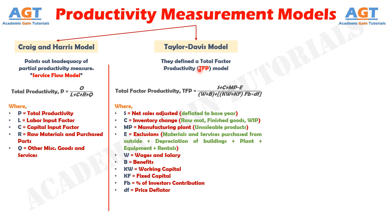According to the Taylor-Davis Model, Total Factor Productivity equals Net Sales Adjusted (S), plus inventory charge (C) including raw materials, finished goods, and work in process, plus manufacturing plant and unsaleable products like jigs and fixtures expressed as (MP), minus the exclusions including materials and services purchased from outside, plus depreciation of buildings, plant, equipment, and rentals, expressed as (E), all divided by the summation of wages and salary (W), other benefits (B), and working capital plus fixed capital multiplied by the product of the percentage of investors' contribution and price deflator. In this model, raw material was not considered as input on the basis that raw material is the result of some other labor and effort.